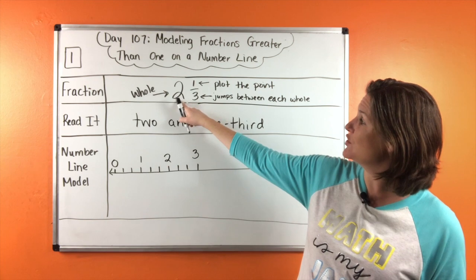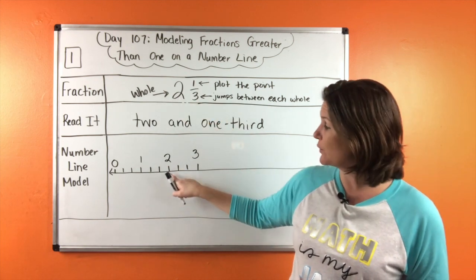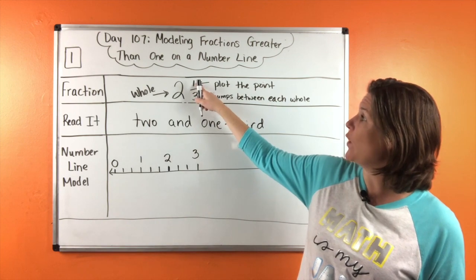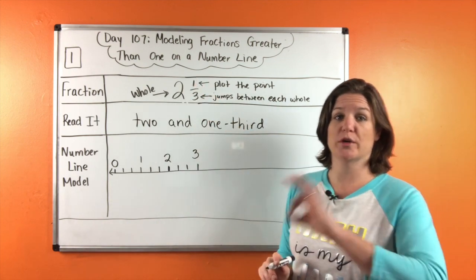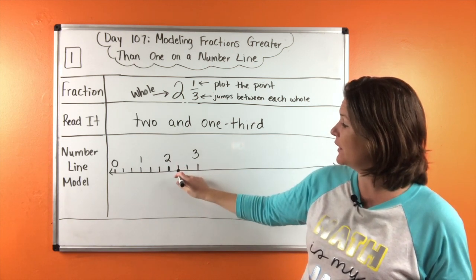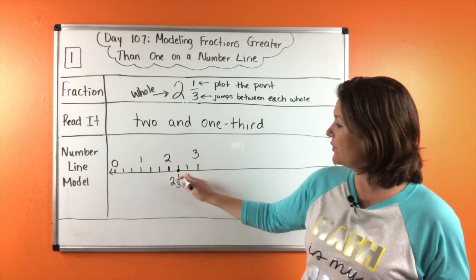So we need to go all the way to two, the whole number two. So right there. Here's the whole number two. And we're going to go one third more. So we're going to jump one more time. Boom, right there.